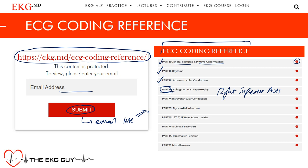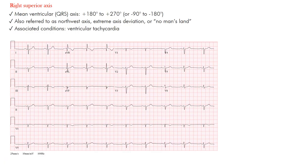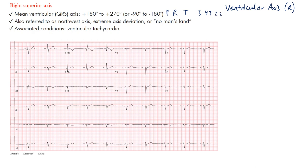Let's get started with right superior axis. When we talk about axis, we are referring to ventricular axis on the EKG. On the EKG printout you may see it displayed as P, R, T followed by three numbers — for example, 3, 43, 22.